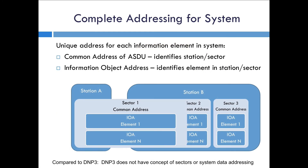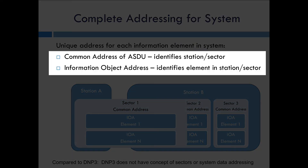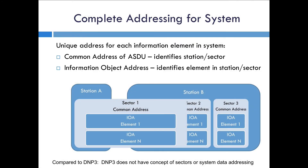The complete addressing for the system uses the common address together with the information object address, or IOA. For example, one station could have just one sector while another could have multiple sectors. Each sector has a common address, and each element has an IOA. The combination of common address and IOA gives a distinct address for every object in the system. This is different from DNP3, where the address number is reused for each data type and uniqueness comes from data type plus index number, whereas in IEC 60870-5 it's based on the common address and the IOA.